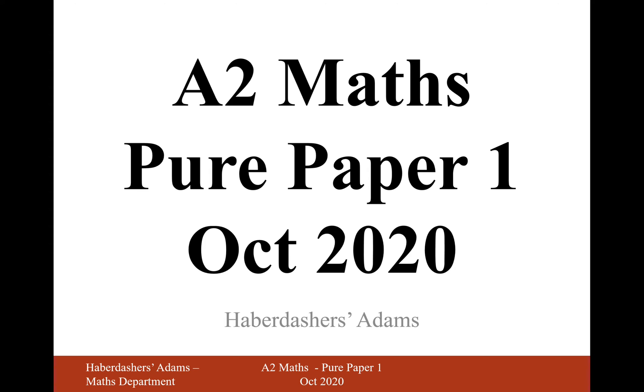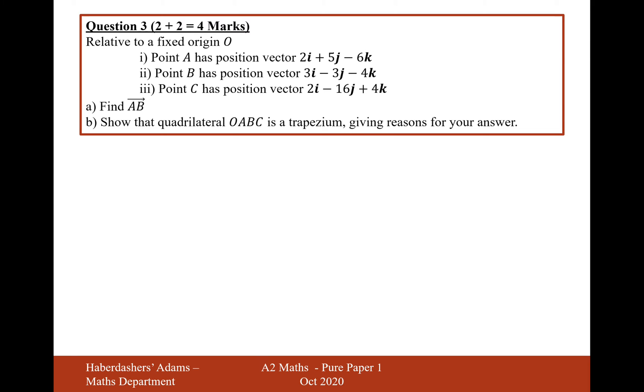Hello there and welcome to your October 2020 paper. Here we're looking at question 3. So relative to a fixed point O, point A has position vector 2, 5, minus 6. B has position vector 3, minus 3, minus 4. And C has position vector 2, minus 16, 4K.